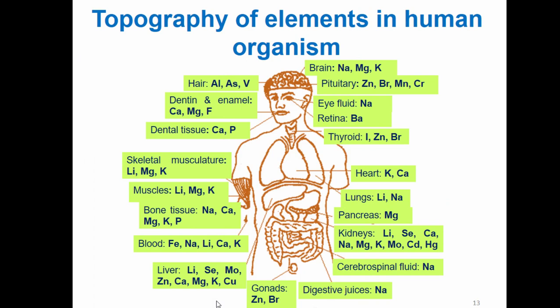This picture shows the topography of elements in the human organism. In the brain you find sodium, magnesium, potassium, aluminum, arsenic, and vanadium. In dentine and enamel you find calcium, magnesium, and fluorine. In dental tissues we have calcium and phosphorus. In skeletal musculature you find lithium, magnesium, and potassium. In muscles we have lithium, magnesium, and potassium. Bone tissues contain sodium, calcium, magnesium, potassium, and phosphorus. In blood we have iron, sodium, lithium, calcium, and potassium.